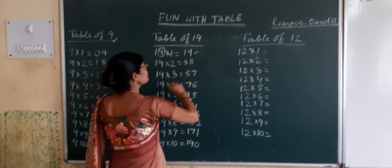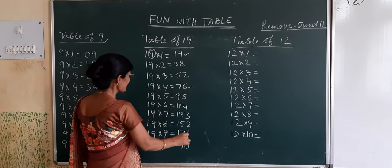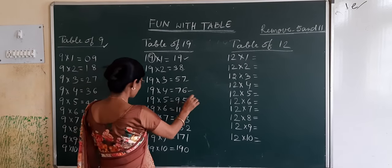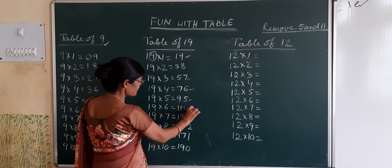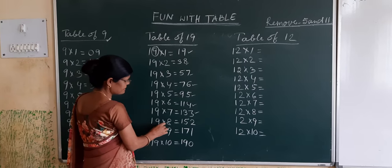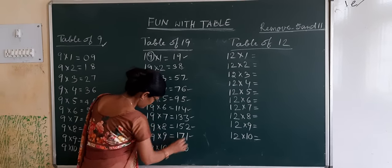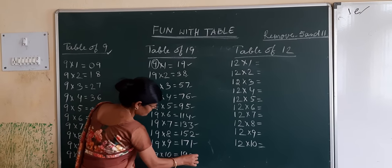Now see the table of 19: 19 x 1 = 19, 19 x 2 = 38, 19 x 3 = 57, 19 x 4 = 76, 19 x 5 = 95, 19 x 6 = 114, 19 x 7 = 133, 19 x 8 = 152, 19 x 9 = 171, 19 x 10 = 190.